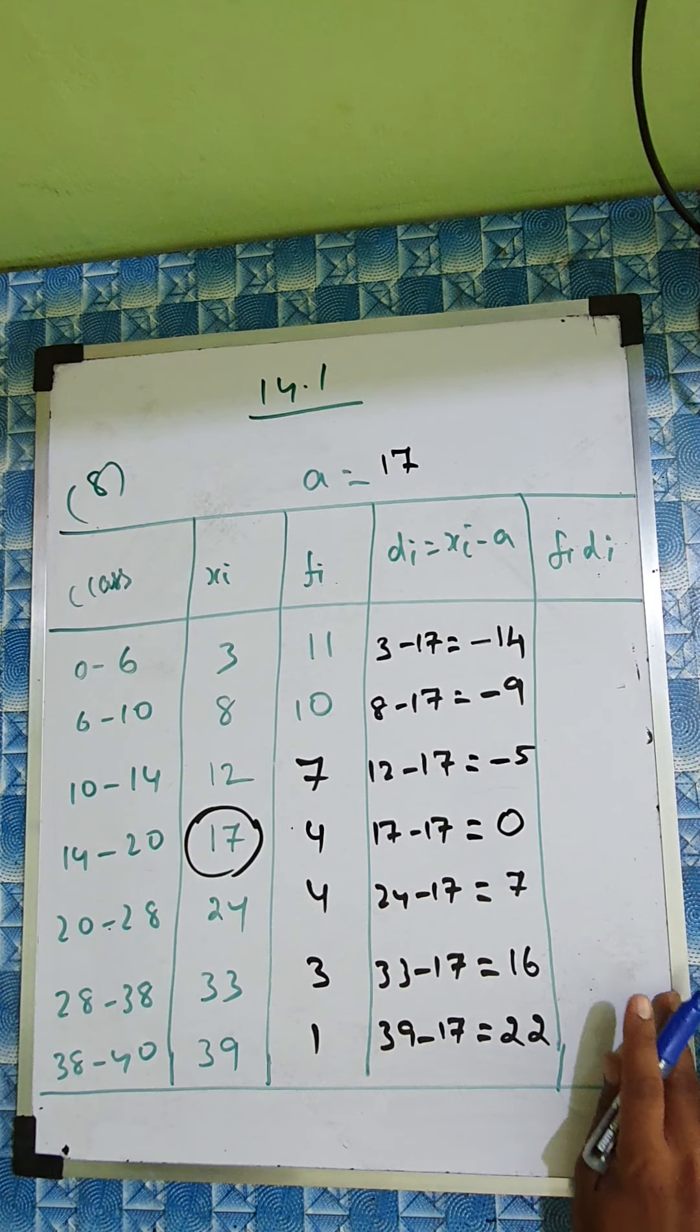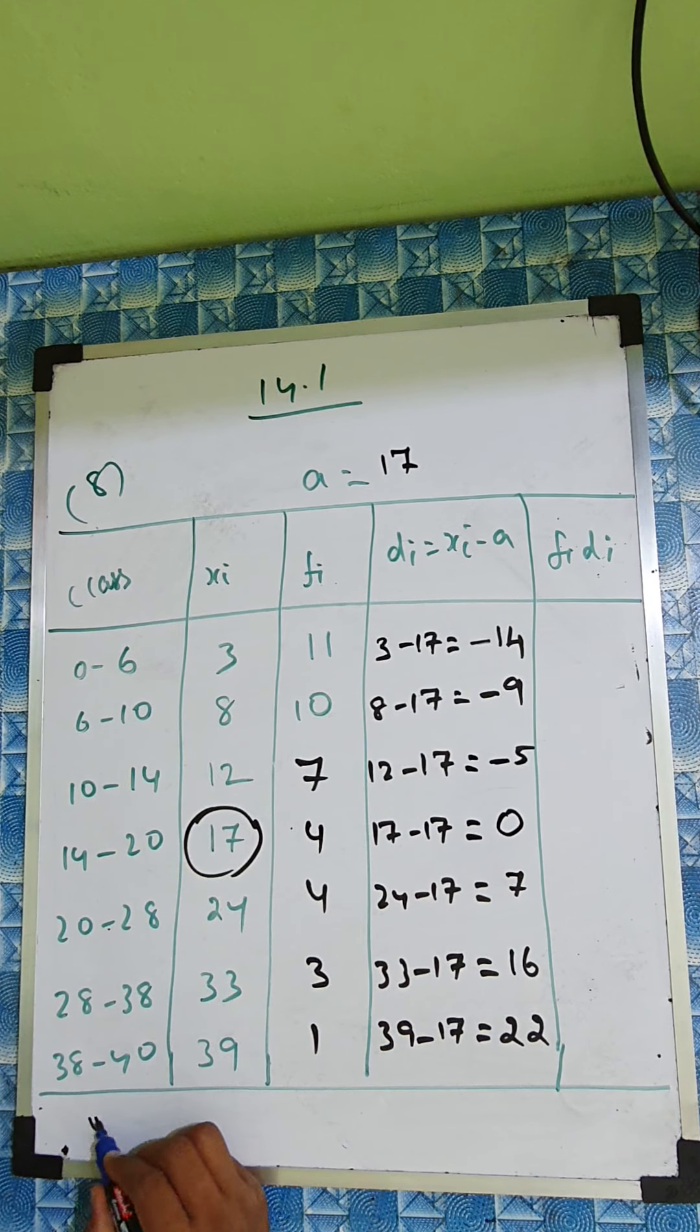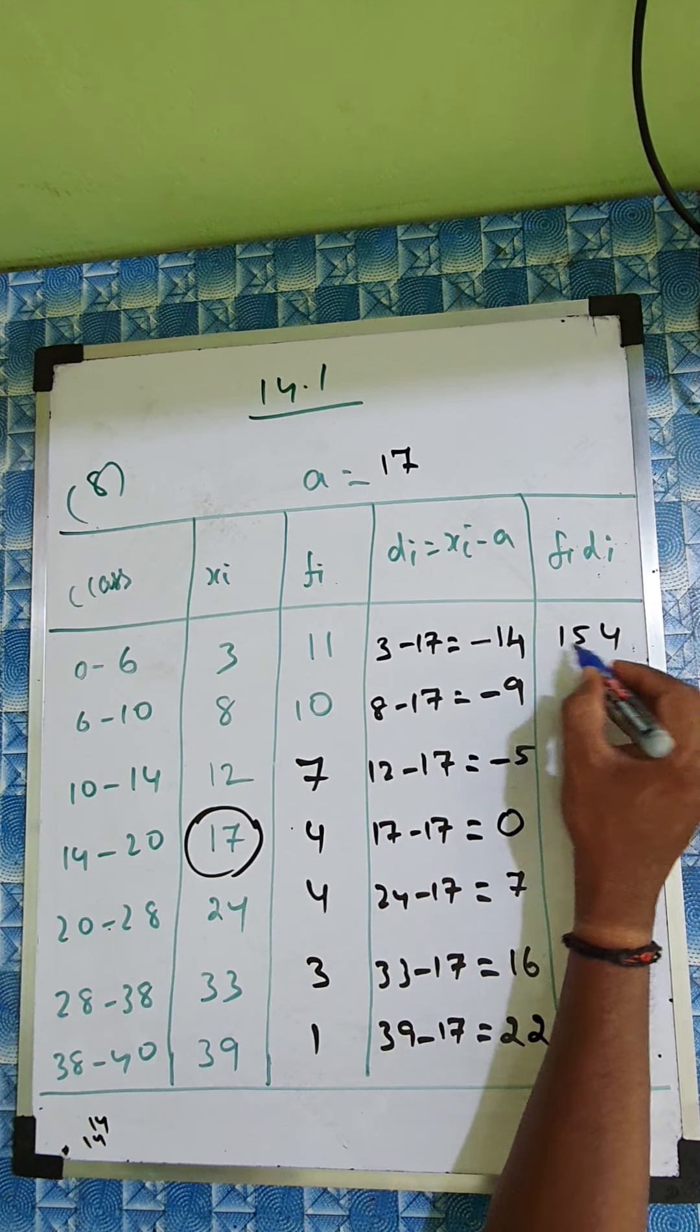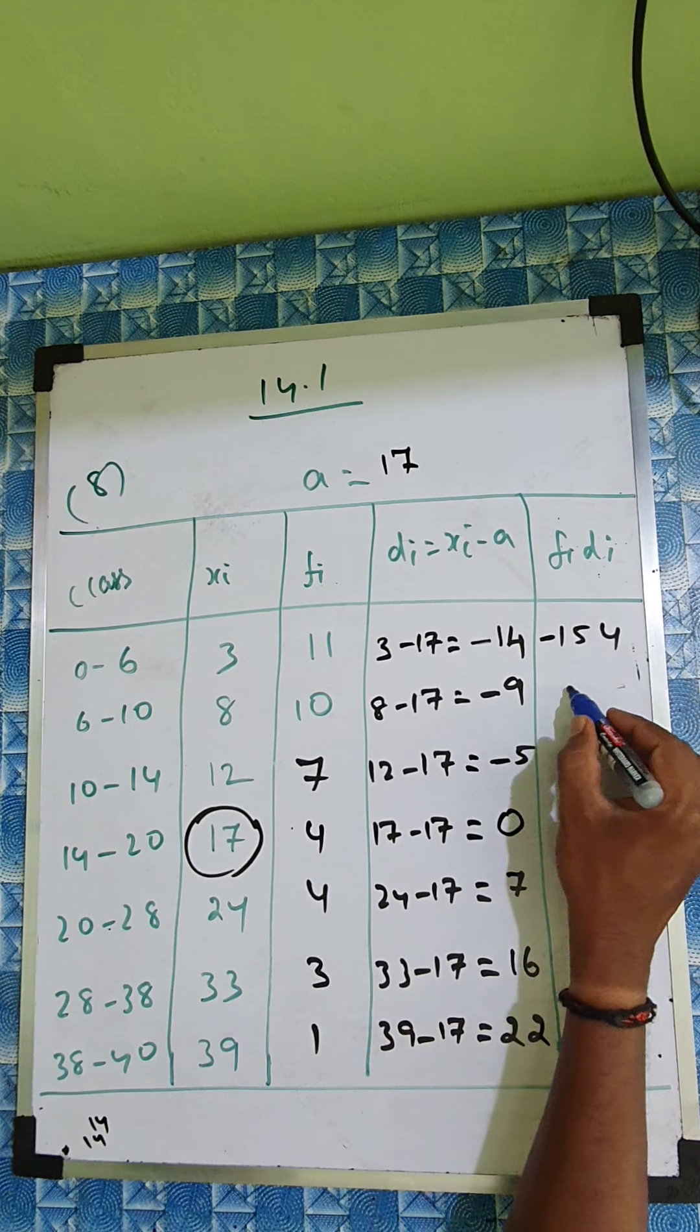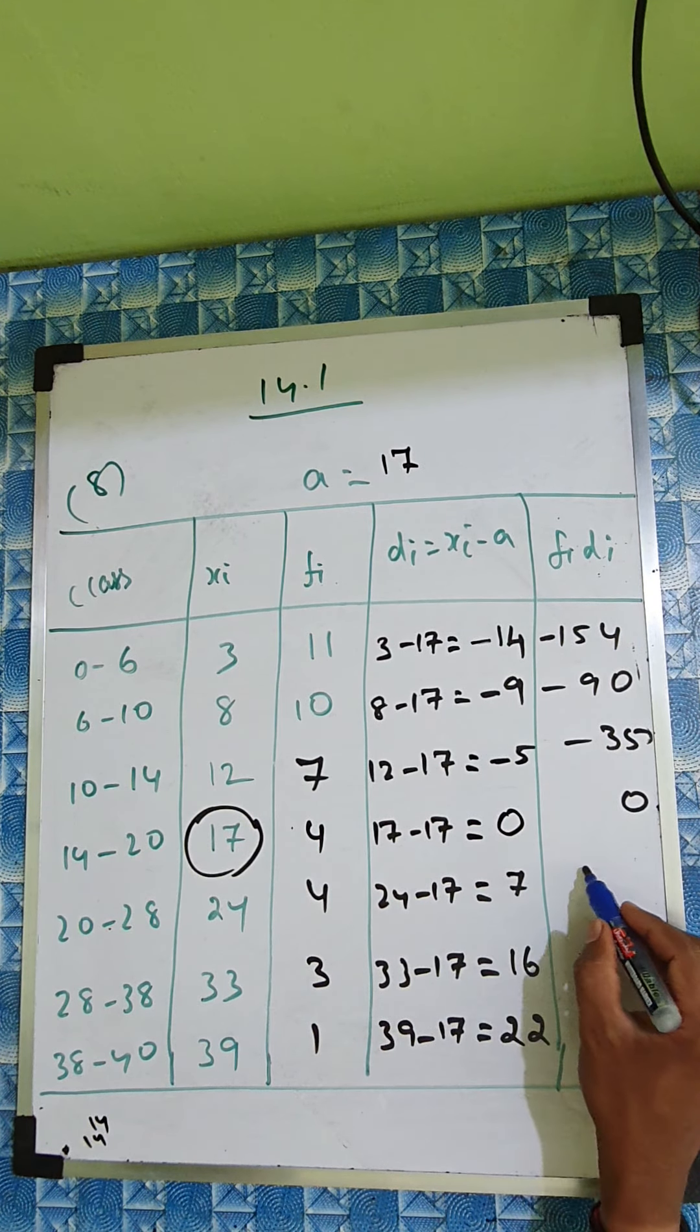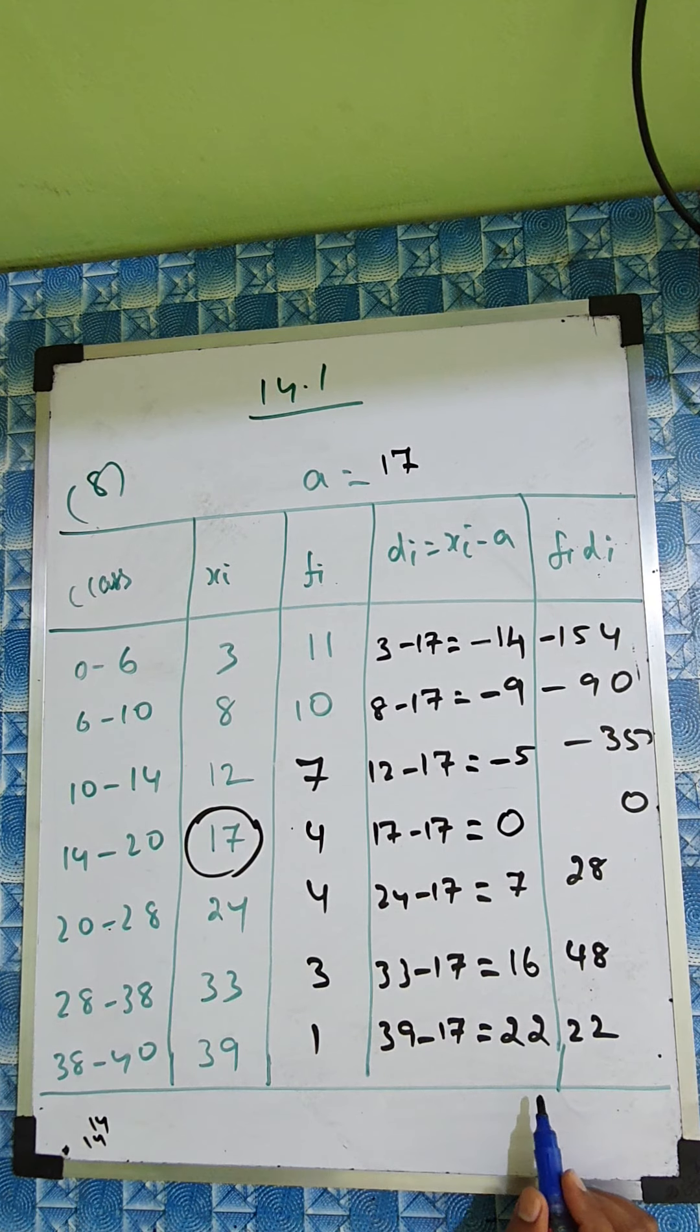Now fi di. So we'll multiply. 11 into 14 is 154. 10 into 9 is minus 90. 7 into 5 is minus 35. 4 into 0 is 0. 4 into 7 is 28. 3 into 16 is 48. 22 into 1 is 22.